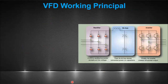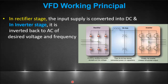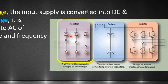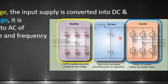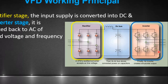VFDs control the motor by varying both frequency and voltage of the input supply at the same time. In a VFD, the first stage is the rectifier stage, where three-phase AC voltage is converted into DC using thyristors. The second stage is the DC bus, which uses a capacitor bank to filter the rectified DC. The final stage is the inverter stage, which uses six IGBTs to invert from DC to a three-phase AC signal, but now with variable voltage and frequency.